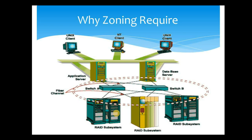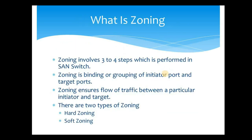With zoning, we can also allocate storage to a single server from multiple storage systems, and vice versa — we can allocate storage from a single storage system to multiple servers. Some extra steps in the storage system are needed to make storage visible to the servers, but that will be discussed later. In short, zoning helps in a SAN network to provide a dedicated and secure path between the server and the storage system.